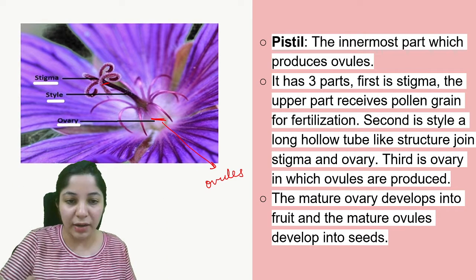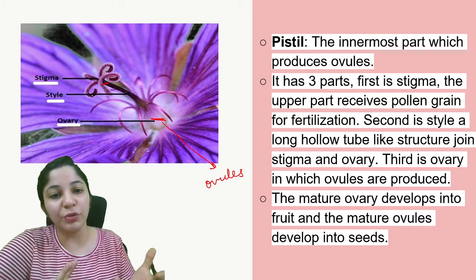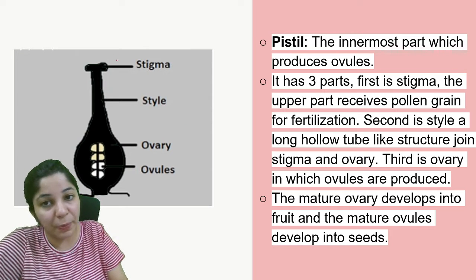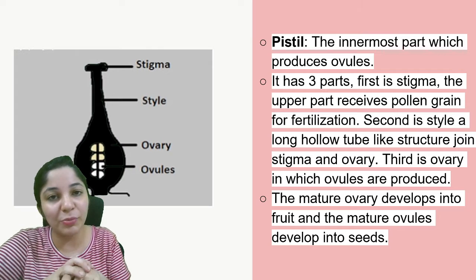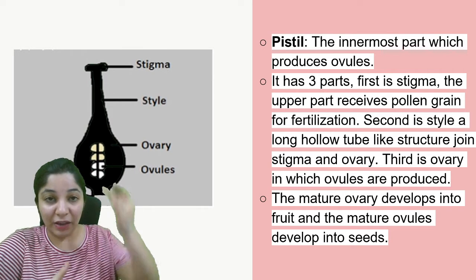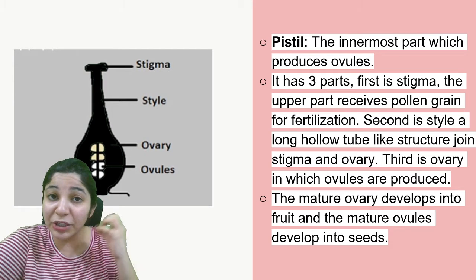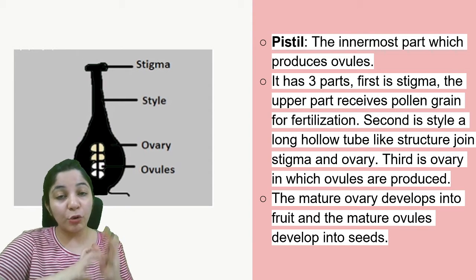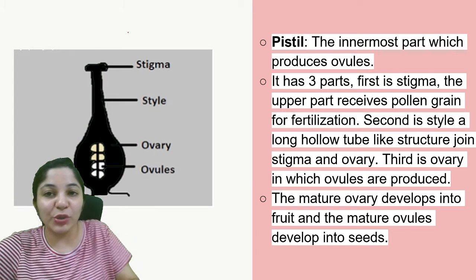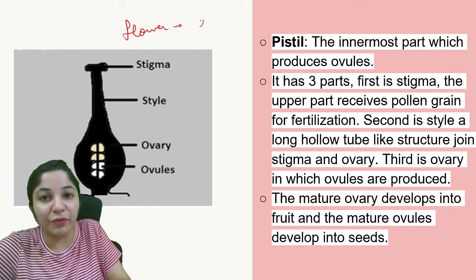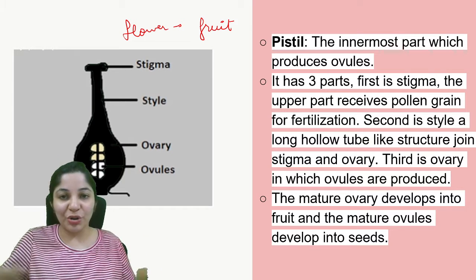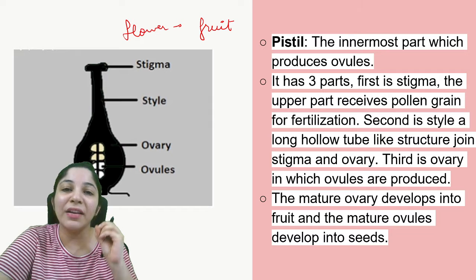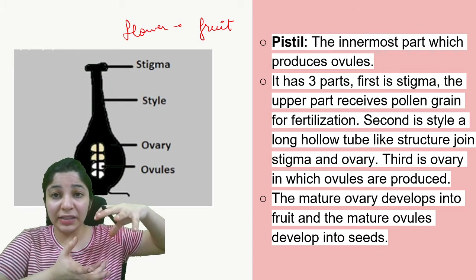You can imagine ovules as eggs that need to be fertilized. The mature ovary develops into the fruit, and the mature ovules develop into the seeds. If you look very closely into the flower, you will be able to see the stigma, style, and ovary. If you cut the ovary into two parts, you can see the ovules. So the ovules, when matured, become the seeds inside the fruit, and the ovary gets matured and becomes the fruit itself.